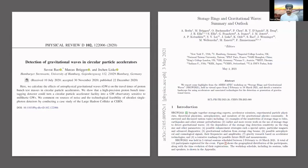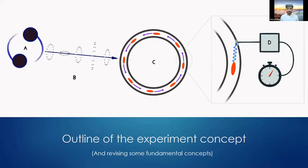This talk is based on the paper titled 'Detection of Gravitational Waves in Circular Particle Accelerators,' published late last year. It was immediately followed by an international CERN workshop to discuss the detection of gravitational waves in storage rings, where a different group — previously at Slack and now at IPHT Paris — confirmed our main calculations. I'll first give a brief outline of the experiment concept, then review fundamental concepts of gravitational waves, and then discuss the main experiment and the role of heavy ions.